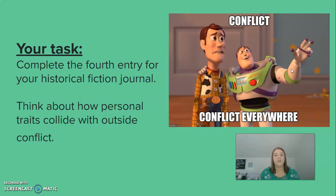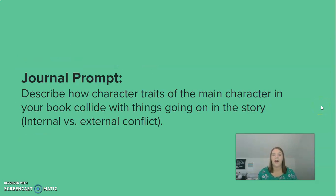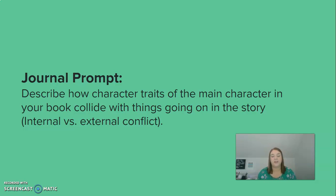Today your task is to complete the fourth journal entry for your historical fiction journal and think about how personal traits collide with outside conflict. Your journal prompt is: describe how character traits of the main character in your book collide with things going on in the story. What is your character struggling with on the inside — just within themselves? And what is your character struggling with on the outside: things happening in history, in their life, with other people? What is the conflict internally and externally for your character?